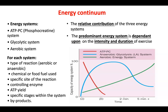This should make sense: the ATP-PC system is used for high intensity, short duration activity up to 10 seconds. The glycolytic system is used for high intensity work from 10 seconds to approximately 3 minutes. And the aerobic energy system is used for low to moderate intensity, long duration activity — roughly 3 minutes to 5 hours.